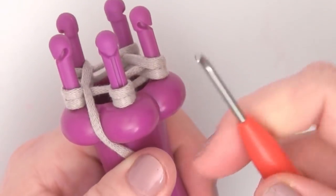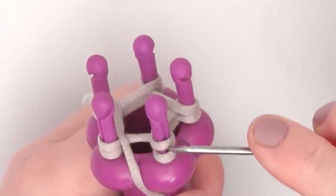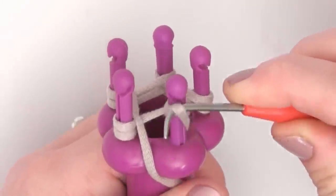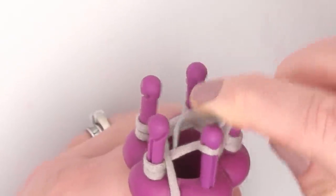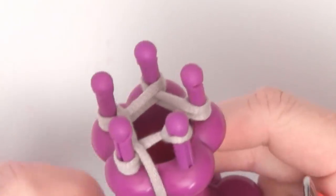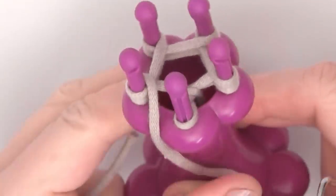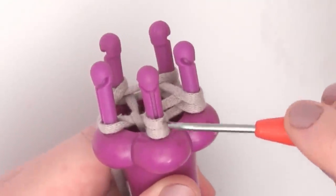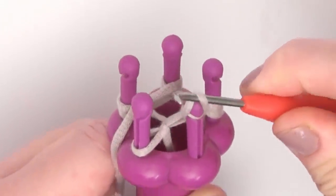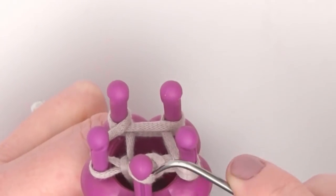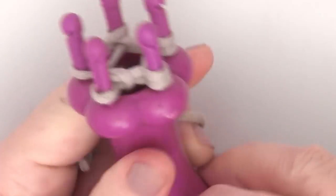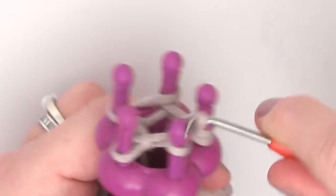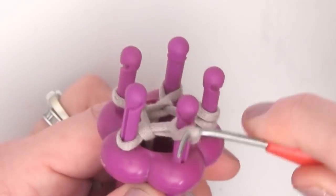Okay, now using our hook, we simply take the bottom loop here and we're going to bring it over the top loop and then let it go. Again, the bottom loop here is picked up by our hook. We bring it over the top and off. Now let's go all the way around until all five pegs have just one loop remaining.